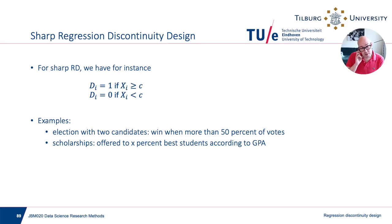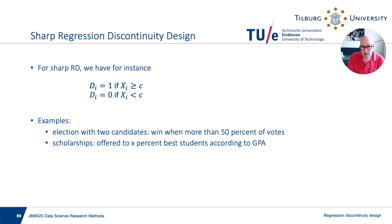What are examples? First, think of an election: the candidate who has at least 50 percent of the votes plus one will win, so 50 percent is the cutoff. Or think of scholarships — scholarships might be offered to the top x percent of students in a cohort according to GPA. From the perspective of one student, the cutoff may not even be known beforehand, but whether your GPA is just below or just above the cutoff can be thought of as random if you're close.